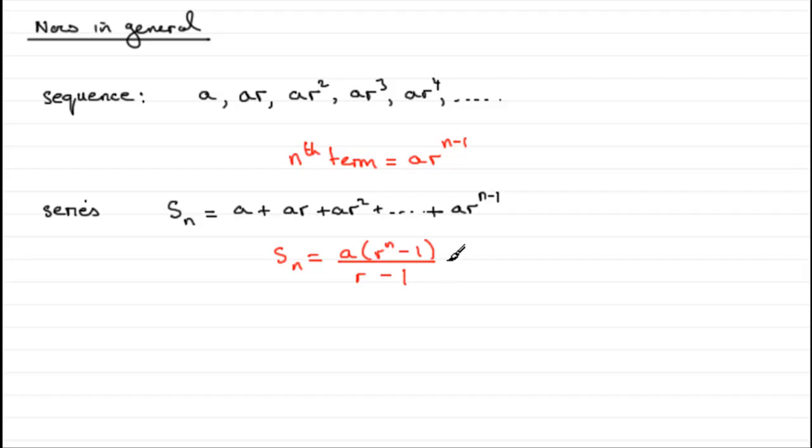Mind you, some people prefer to use another formula rather than this one. If we multiply top and bottom by minus 1, you end up with a times and we can switch the terms in this top bracket around and get 1 minus r to the power n. And we switch the terms around the bottom because if we multiply this by minus 1, we get minus r plus 1, which we prefer to write as 1 minus r.